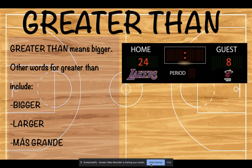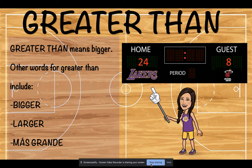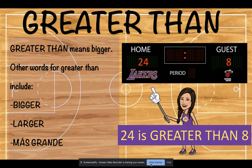For example, on this scoreboard, the Lakers have a score of 24, and the Miami Heat has a score of 8. Out of these two teams, who has the greater score? That's right. The Lakers do. So how do we read this? We would say 24 is greater than 8. Awesome.